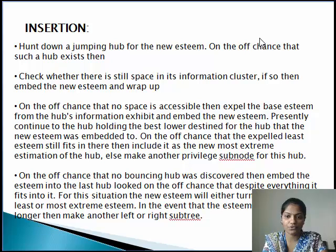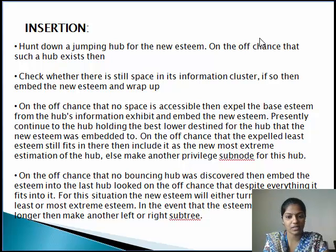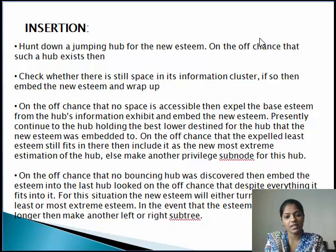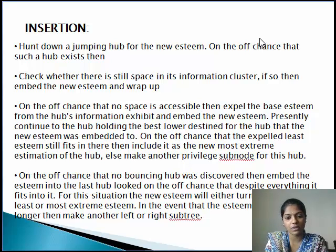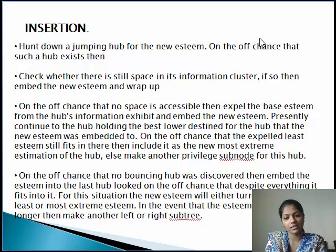In insertion: search for a bounding node for the new value. If such a node exists, check whether there is still space in its data array. If so, insert the new value and finish. If no space is available, then remove the minimum value from the node's data array and insert the new value. Then proceed to the node holding the greatest lower bound for that node, and if the removed minimum value still fits there, insert it; else make a new right sub-node. If no bounding node was found, insert the value into the last node visited. If it fits, the new value will become either the new minimum or maximum value of that node. If the value does not fit, make a new left or right subtree.